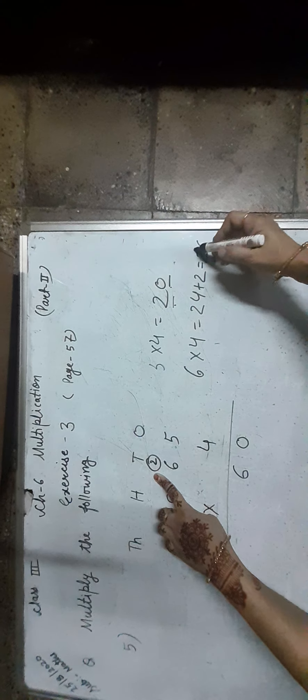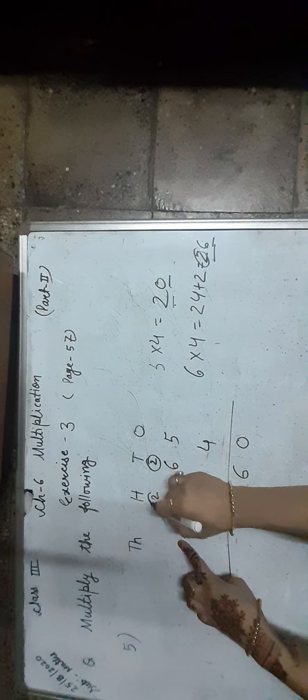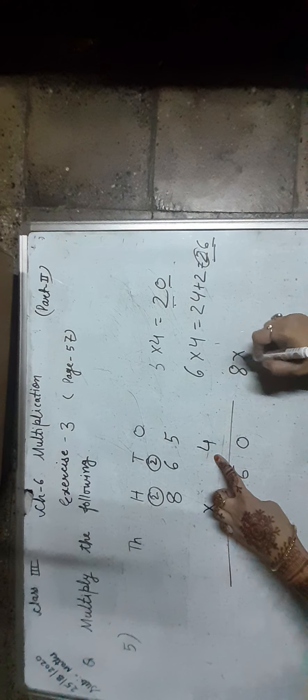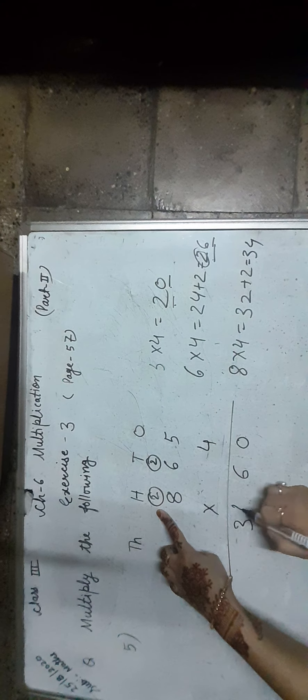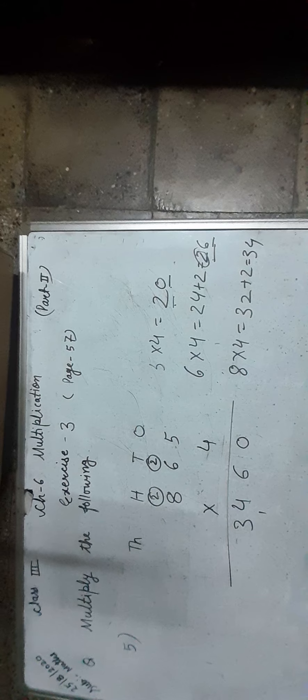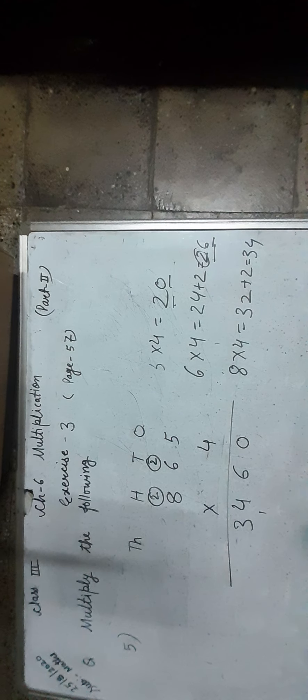We write 6 in the 10s place and carry 2 over to the 100s place. Now, 8 × 4 is equal to 32, plus 2 carry over, equals 34. We write 34 at last. The product of 865 and 4 is 3,460.